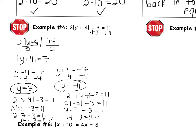I cannot stress enough how important it is that you write two equations. Some students only write one — they get y plus 4 equals 7, find y equals 3, and assume negative 3 is also an answer. This does not work. You cannot solve one equation and make your answer both positive and negative. Notice we got negative 11, not negative 3. You have to write two separate equations.